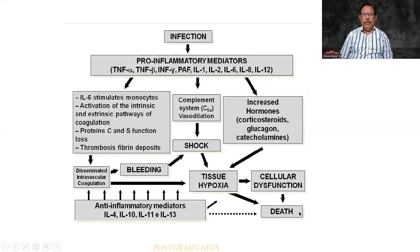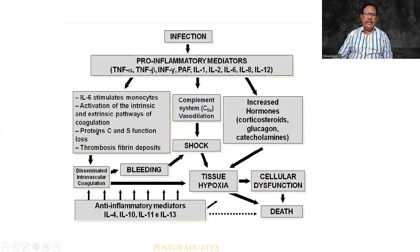This beautiful flow diagram alone shall be my class. There is an infection — pro-inflammatory mediators consisting of tumor necrosis factor alpha, beta, interferon gamma, platelet activating factor, and a series of interleukins. These lead to the production of interleukin-6, which stimulates monocytes, activation of the intrinsic and extrinsic pathways leading to coagulation, and consumption of protein C and protein S. Finally, there can be thrombosis and fibrin deposits.